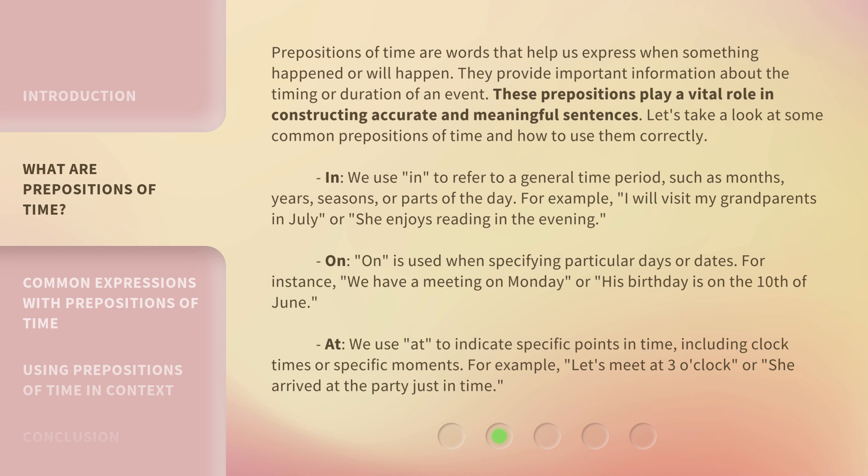"On": on is used when specifying particular days or dates. For instance, we have a meeting on Monday, or his birthday is on the 10th of June.